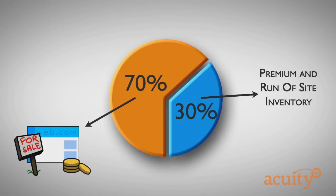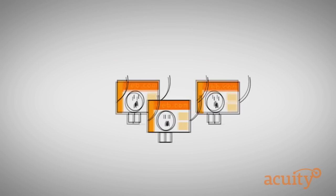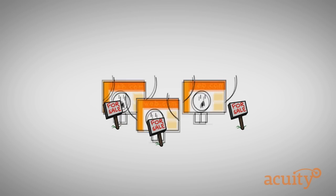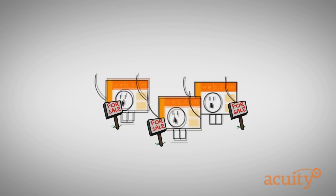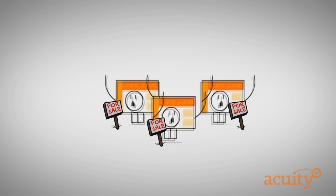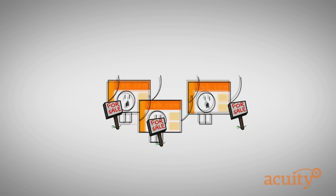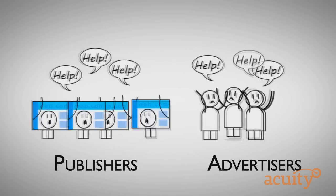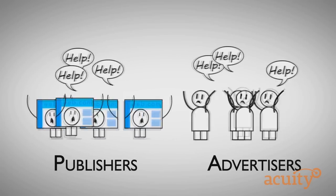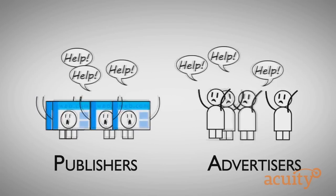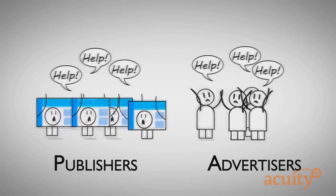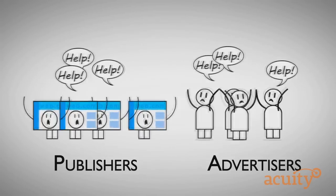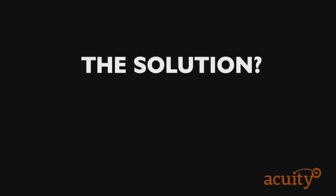Further, for many small publishers, also known as long tail sites, there isn't a sales stream which can properly sell their quality, targeted inventory, leaving them wanting more from display. As you can see, display advertising needs a shake-up to provide more value to both advertisers and publishers. So what's the solution?